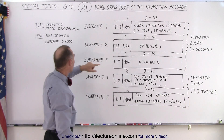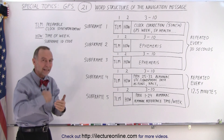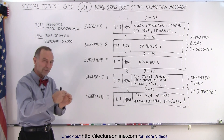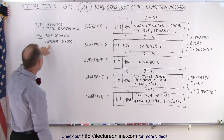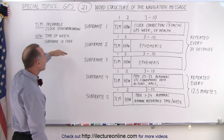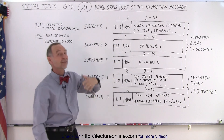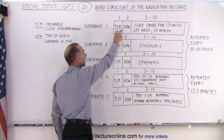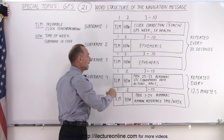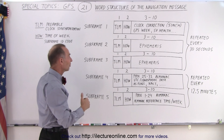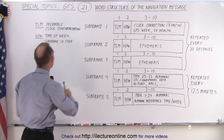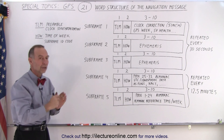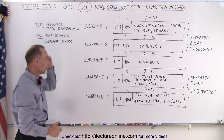On the handover word, notice that it primarily contains the time of the week, which gets reset every week at midnight between Saturday and Sunday for the next seven days. It also has a sub-frame ID code so that the receiver knows which sub-frame it is receiving. Those get repeated every single sub-frame, every 30 seconds, giving us the preamble, clock synchronization, time of the week, and the sub-frame ID code every time the receiver reads the sub-frame message.